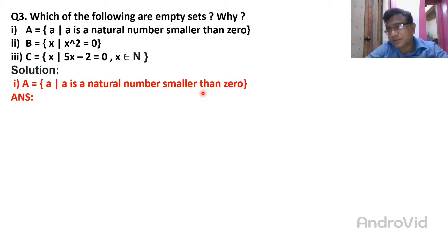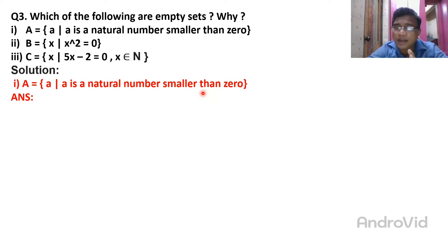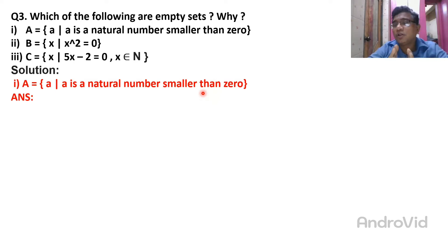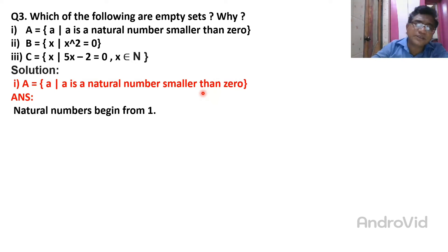In the question, they ask you to write the natural number that is smaller than 0. Is it possible? Natural numbers start from 1, so 1 is the smallest natural number, which is already greater than 0. So a natural number smaller than 0 is not possible. Therefore, set A is an empty set.